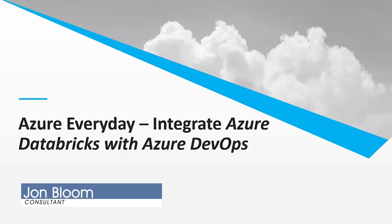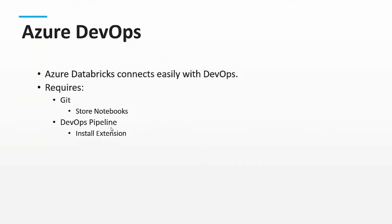Today we'll talk about Azure Databricks and how we can integrate with Azure DevOps. When we think of Azure DevOps connected to Databricks, there are really two primary things we're focused on. One is Git — that's how we store our notebooks over time and iterations, look back and see how things change, and retrieve prior versions. Another nice feature is the DevOps pipeline.